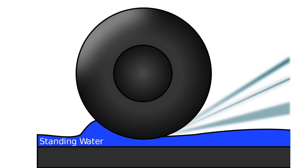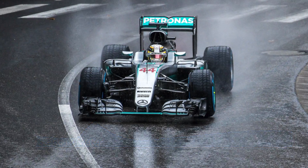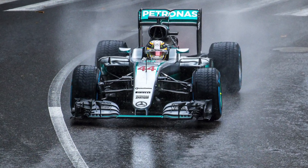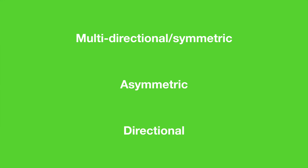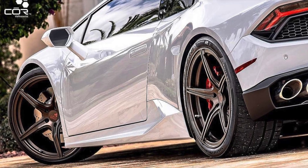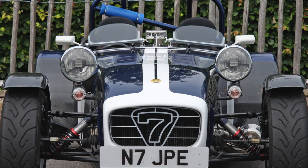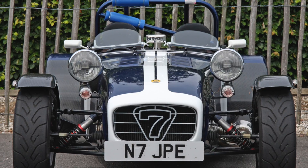Aquaplaning occurs when there is water in between the tyres and the road surface, resulting in a loss of traction that can be extremely dangerous. There are three main types of tyre tread patterns: multi-directional or symmetric, asymmetric, and directional. Although tread patterns fit under these three categories, companies make their own variations of the pattern, so the tread pattern on your car could be slightly different to the patterns shown in the video.